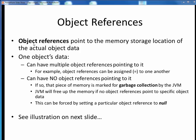As we've seen, object references are like pointers from an object variable name to the actual object data stored somewhere else in memory. That actual object data can have multiple references pointing to it, such as when we equate objects to each other using the assignment operator. Or that object data can have no object references pointing to it. In this case, the object data is stranded or orphaned in memory, and is thus marked for garbage collection by the Java Virtual Machine, or JVM. If the JVM detects some object in memory that no one is pointing to, that memory will be freed up for other use.